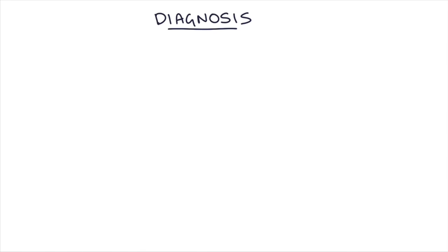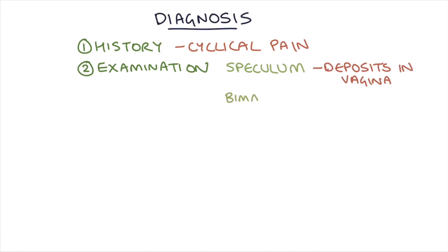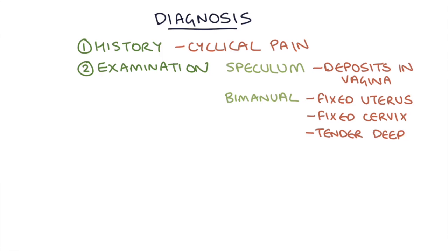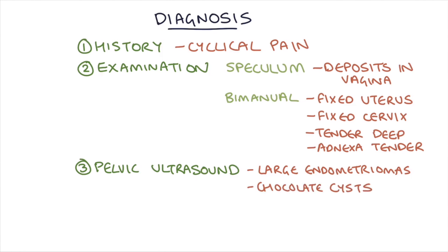To diagnose endometriosis in somebody having cyclical pains and particularly heavy periods, a thorough examination might reveal other causes. Speculum examination might reveal deposits of endometriosis in the vagina. Bimanual examination could reveal a fixed uterus — meaning you can't easily move it — and the cervix could be fixed in place and very tender deep inside the vagina, or there could be adnexal tenderness. Pelvic ultrasound can reveal large endometriomas or chocolate cysts in the ovaries, but is often unhelpful as it may be normal even in significant endometriosis.